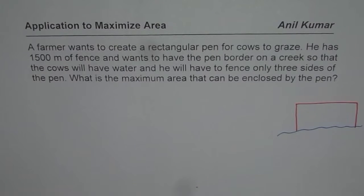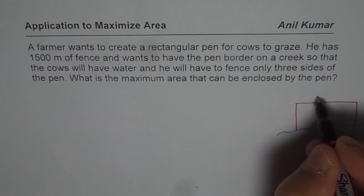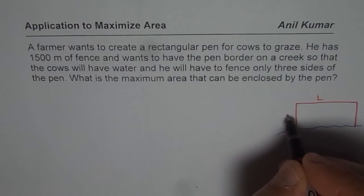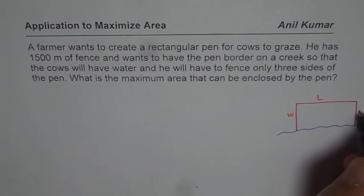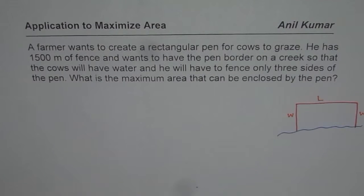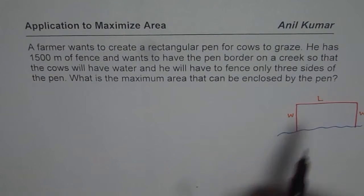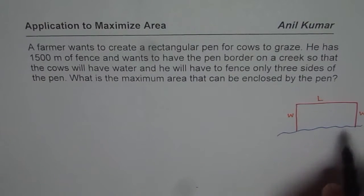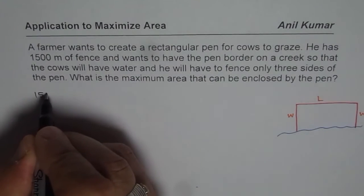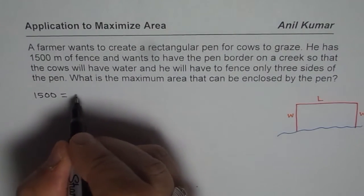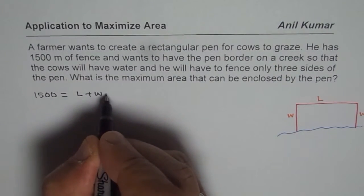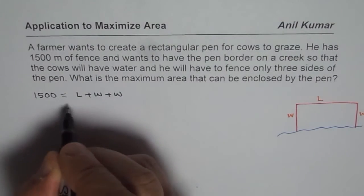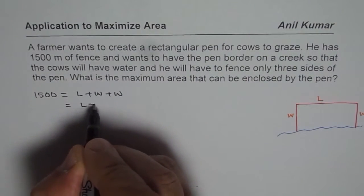So let us assume in this particular case that the length and width for the fence is L and W. So there are two widths and one length. We can form an equation given the perimeter. 1,500 meters of fence, that is the fence. So that means 1,500 meters is indeed equals to L plus W plus W. Or you can say is equals to L plus 2W.